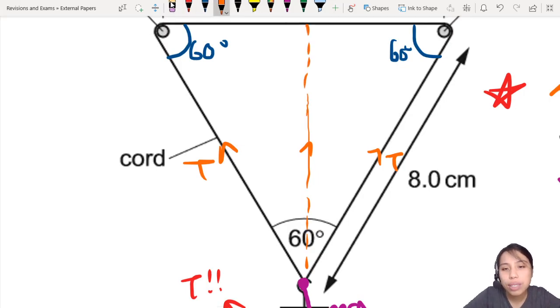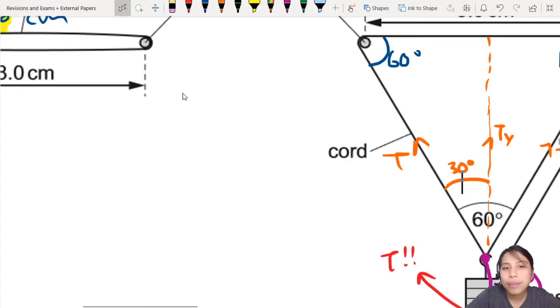So this is Ty. If that is 60, this is half the angle, 30 degrees. So cos 30 is adjacent over hypotenuse. Cos 30, adjacent is Ty, hypotenuse is T, and we want Ty. So Ty will be T·cos 30.